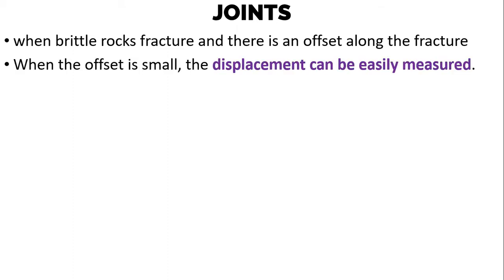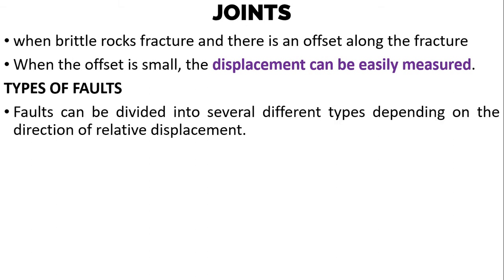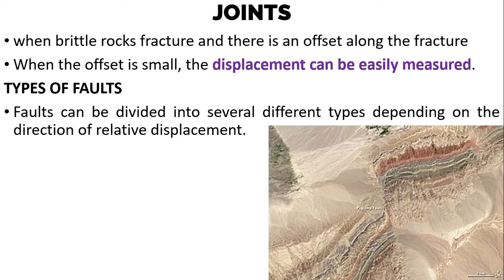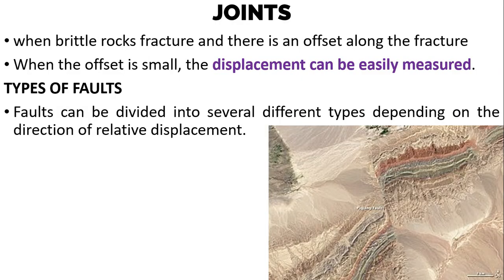Faults occur when brittle rocks fracture and there is an offset along the fracture. When the offset is small, the displacement can easily be measured, but sometimes the displacement is so large that it is difficult to measure. Faults can be divided into several different types depending on the direction of relative displacement. Since faults are planar features, the concept of strike and dip also applies, and thus the strike and dip of the fault plane can be measured.